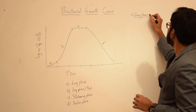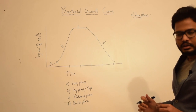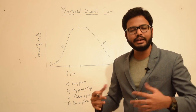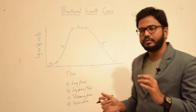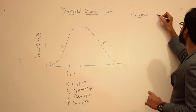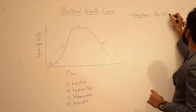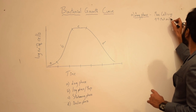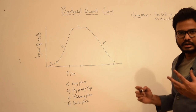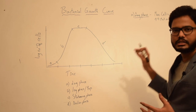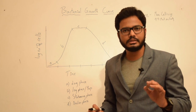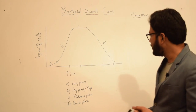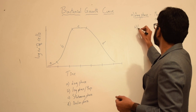In lag phase, the bacterial cells adjust to the new environment, metabolic activity increases tremendously, and they achieve maximum cell size at the end of lag phase. There is increased metabolic activity and the cells are getting prepared for division. Always remember that there is no growth observed in lag phase — that is the reason why we call it 'lag,' meaning lagging.